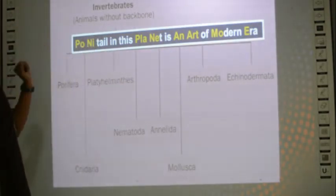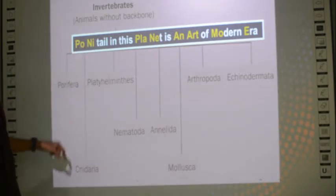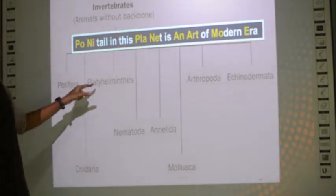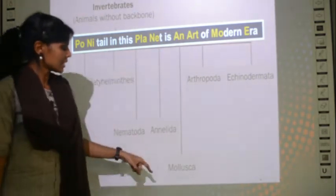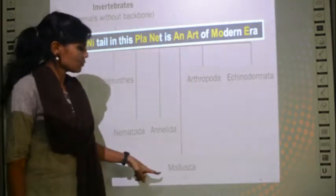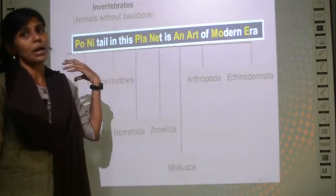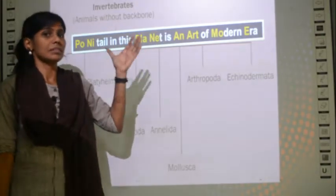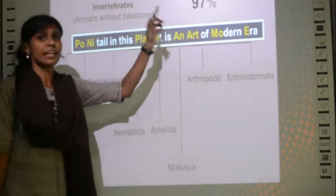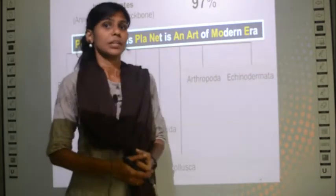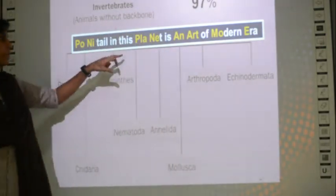In this sentence, PO stands for Porifera, NI stands for Cnidaria, PLA stands for Platyhelminthes, NE stands for Nematoda, AN stands for Annelida, ART stands for Arthropoda, MO stands for Mollusca, and E stands for Echinodermata. You have to memorize this chart completely. 97% of the animal group includes invertebrates and only 3% includes vertebrates.